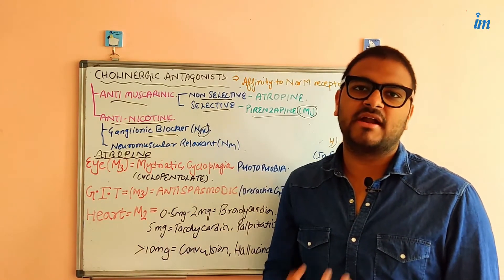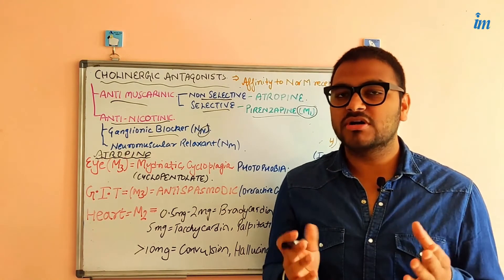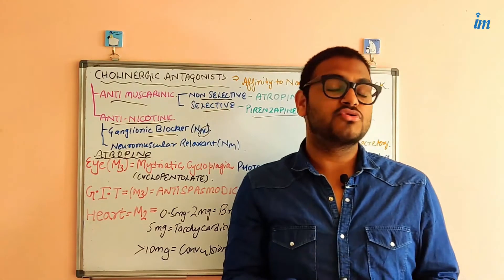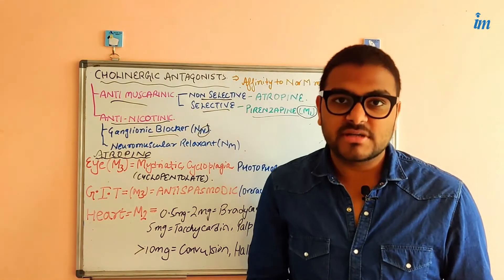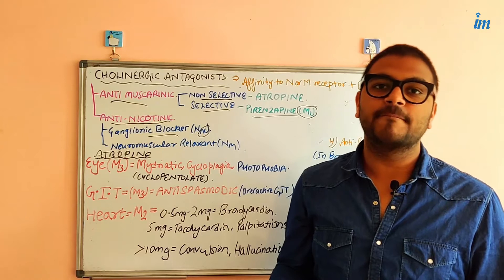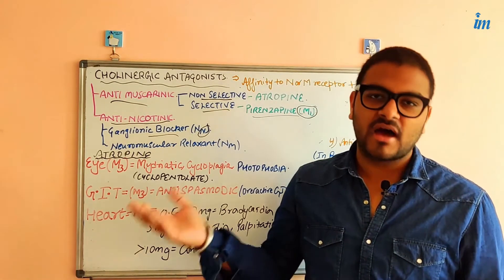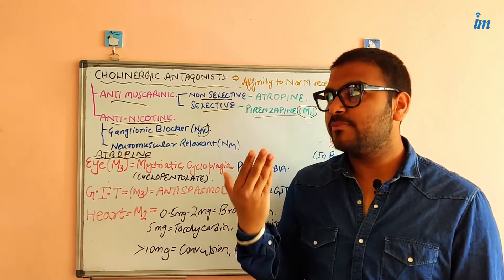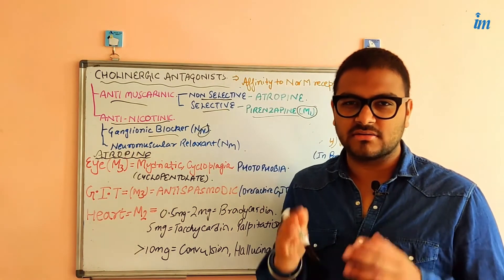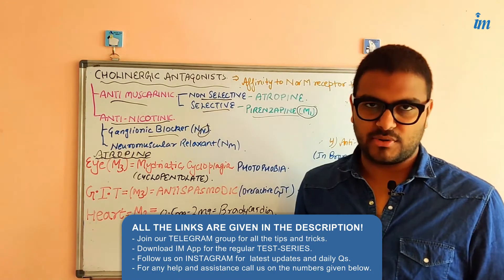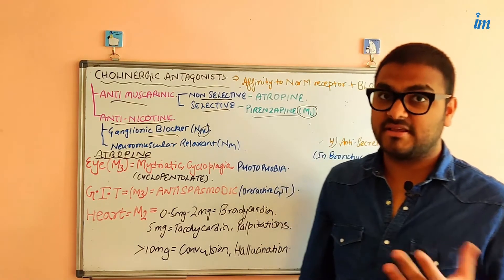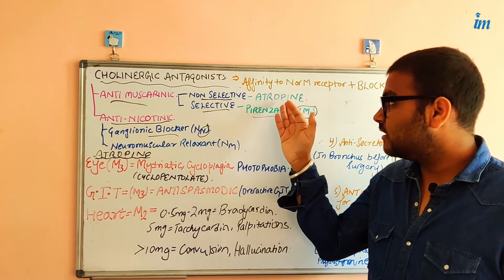For example, if I want bronchodilation by blocking the M3 receptor in the bronchus, a non-selective agent will also bind to M1 receptors, M2 receptors in the heart, and M3 receptors in the bladder, producing many side effects — such as urinary retention, tachycardia, and impaired accommodation of the eye. So non-selective anti-muscarinic agents are not preferred for therapeutic purposes. Atropine is one example — it binds to all types of muscarinic receptors.